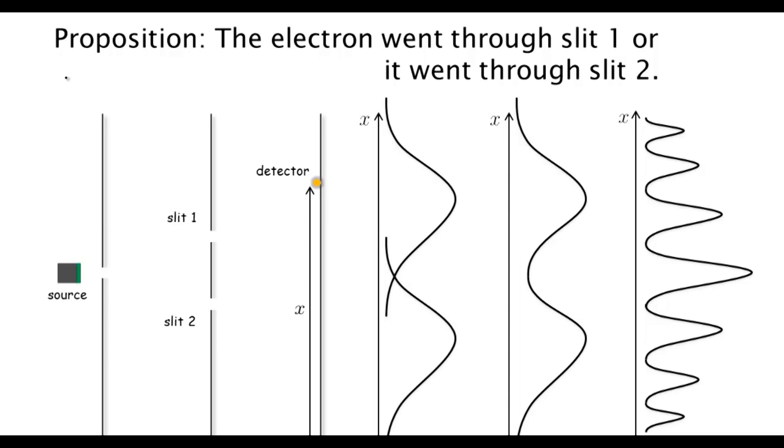We're going to test this proposition. What we're going to do is place a source of light very close to the slit to try to detect whether the electron went through slit 1 or through slit 2. An electron will scatter light.